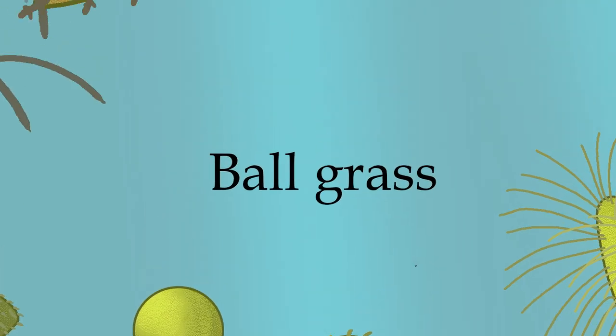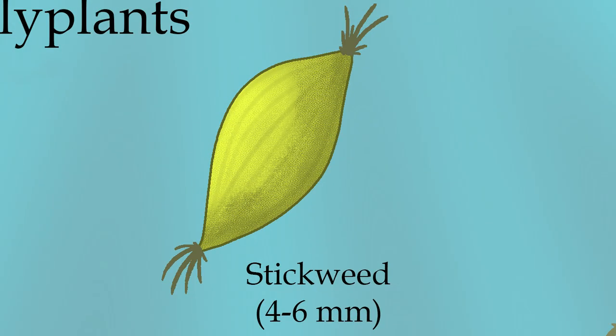Next up is stickweed. Stickweeds are another small group of species, only reaching around 6 millimeters, related to the ball grasses. Like the ball grasses, they are not disc-shaped, instead having an oblong shape similar to that of a rugby ball. Their name comes from their ability to cling to other discofites using specialized roots covered in a sticky substance. This is a safe way to ensure they don't get pushed into darkness, while still remaining fully underwater, unlike some of their larger relatives.